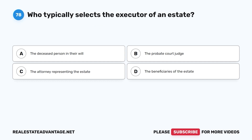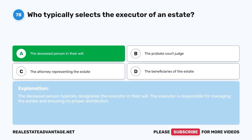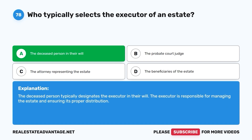Question 78: Who typically selects the executor of an estate? A. The deceased person in their will. B. The probate court judge. C. The attorney representing the estate. D. The beneficiaries of the estate. The correct answer is A, the deceased person in their will. The deceased person typically designates the executor in their will. The executor is responsible for managing the estate and ensuring its proper distribution.